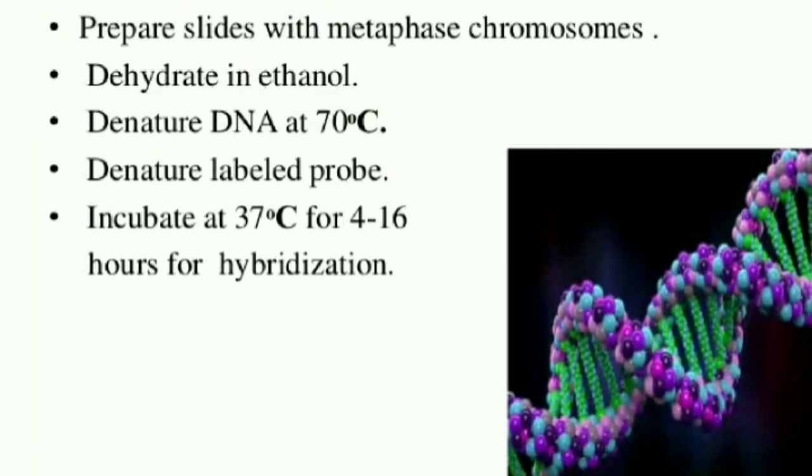Now let us quickly describe what is the procedure of chromosome painting. The first step is preparation of the slides with metaphase chromosomes. After that it is dehydrated in ethanol, and then denature the DNA at 70 degrees Celsius. Denature the labeled probe, then incubate at 37 degrees Celsius for 4 to 16 hours for hybridization.